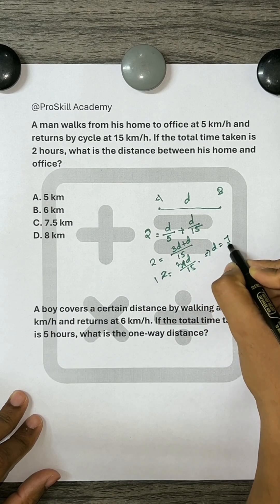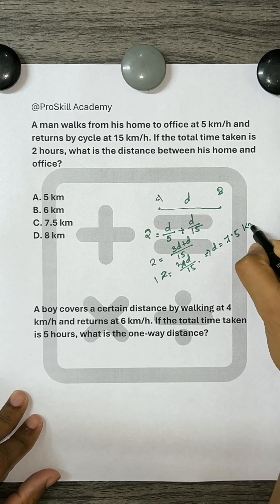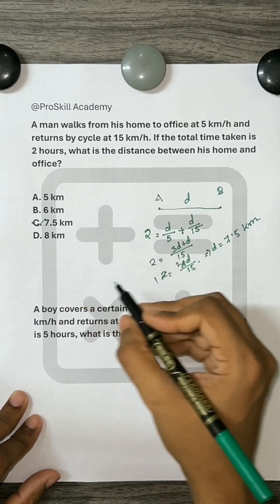Hence, D equals 7.5 km. So, our correct answer is C, 7.5 km.